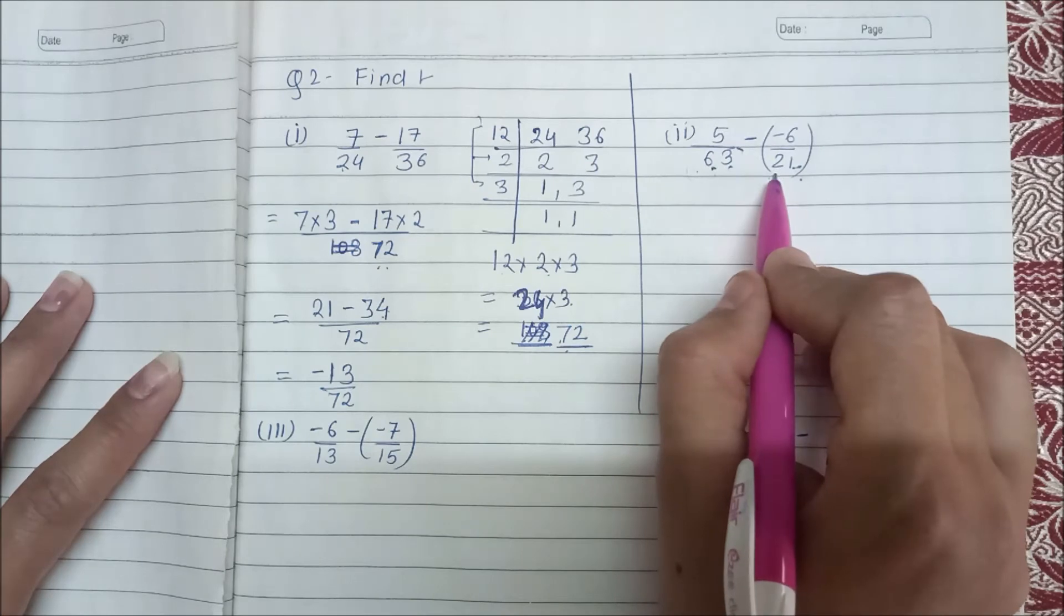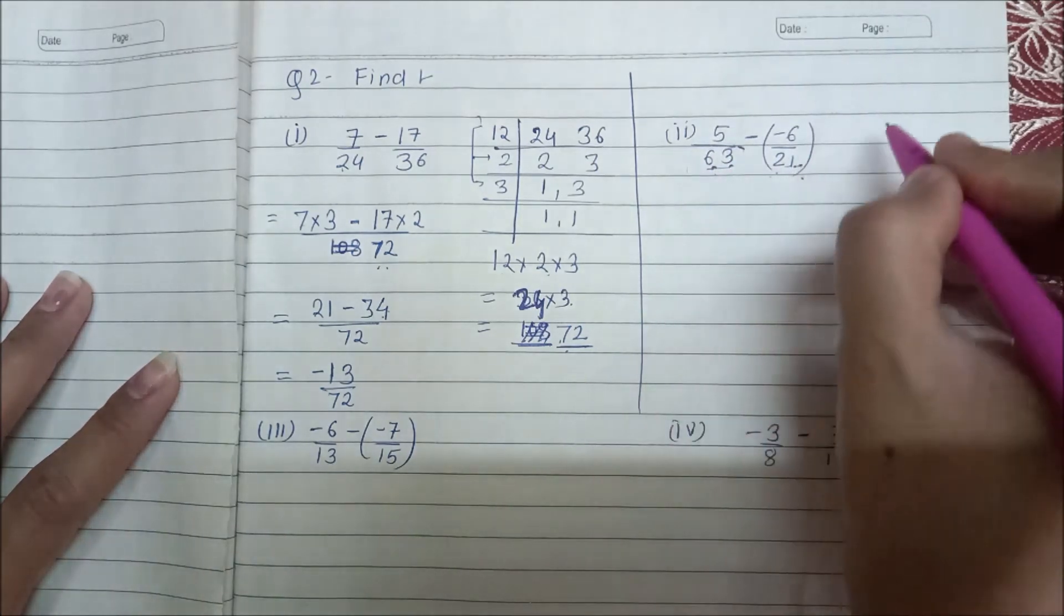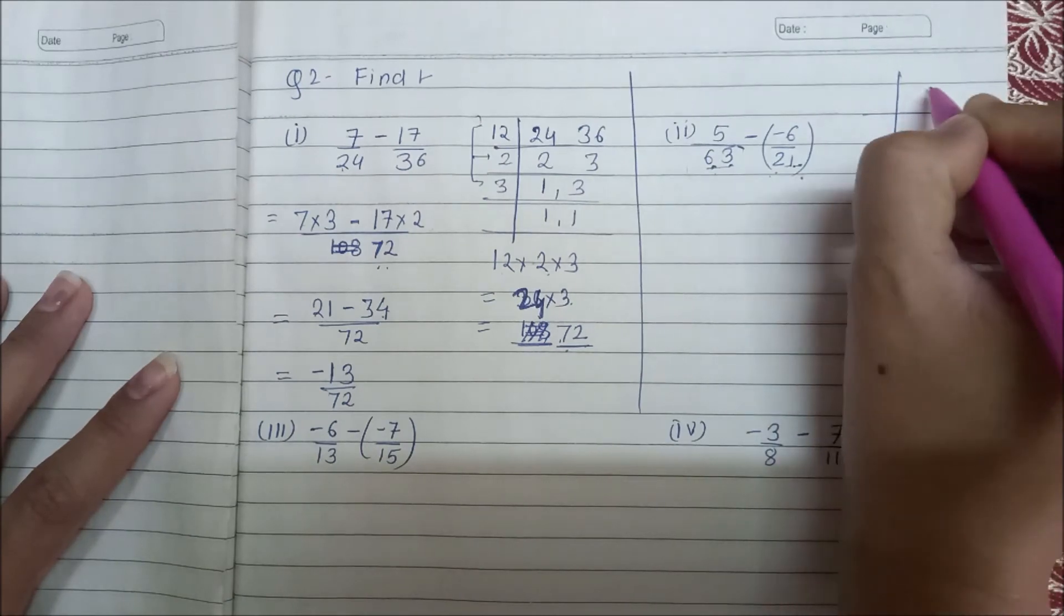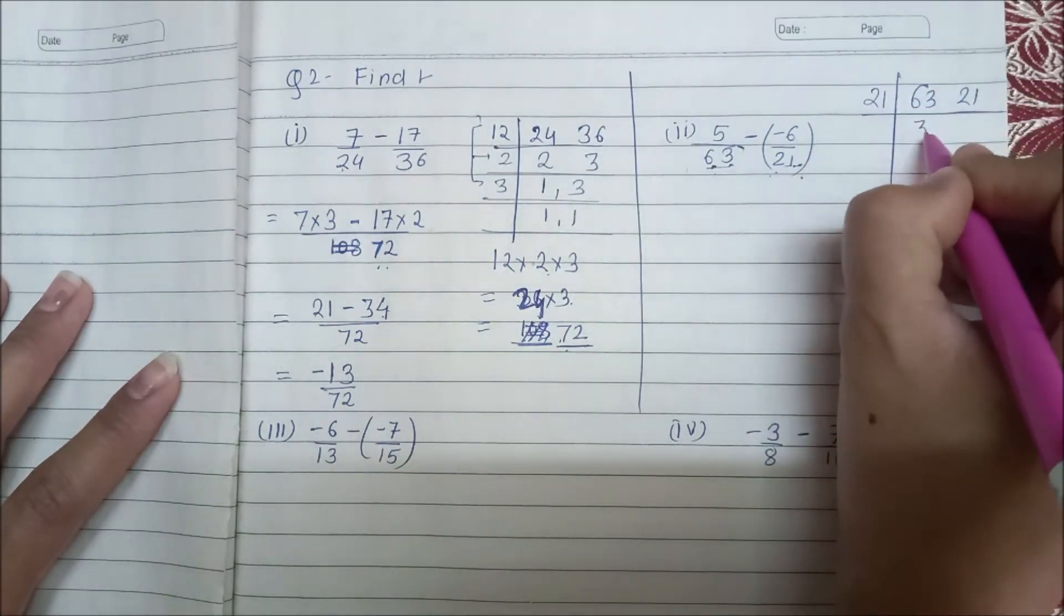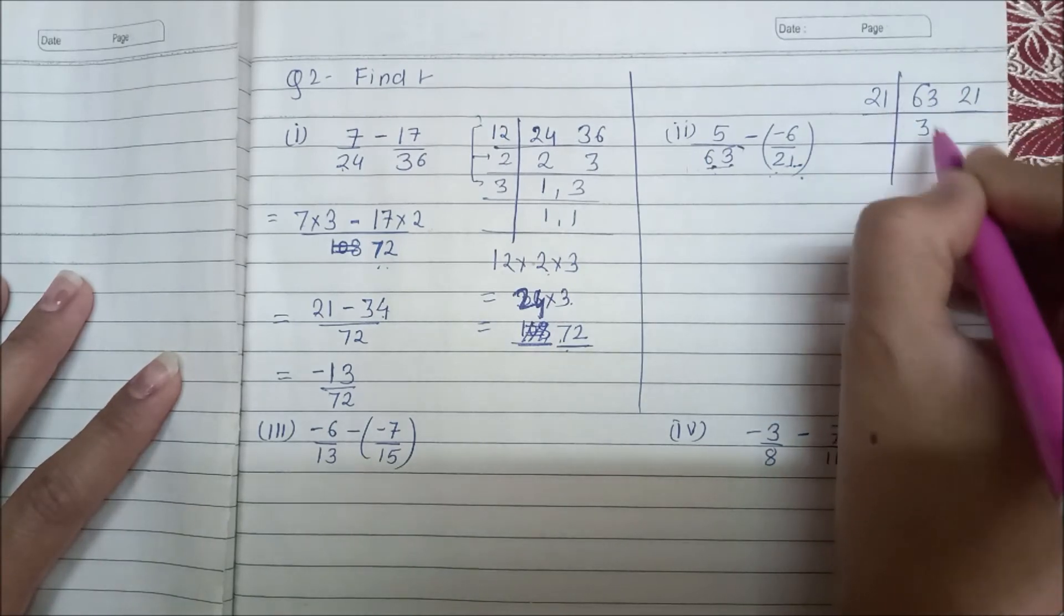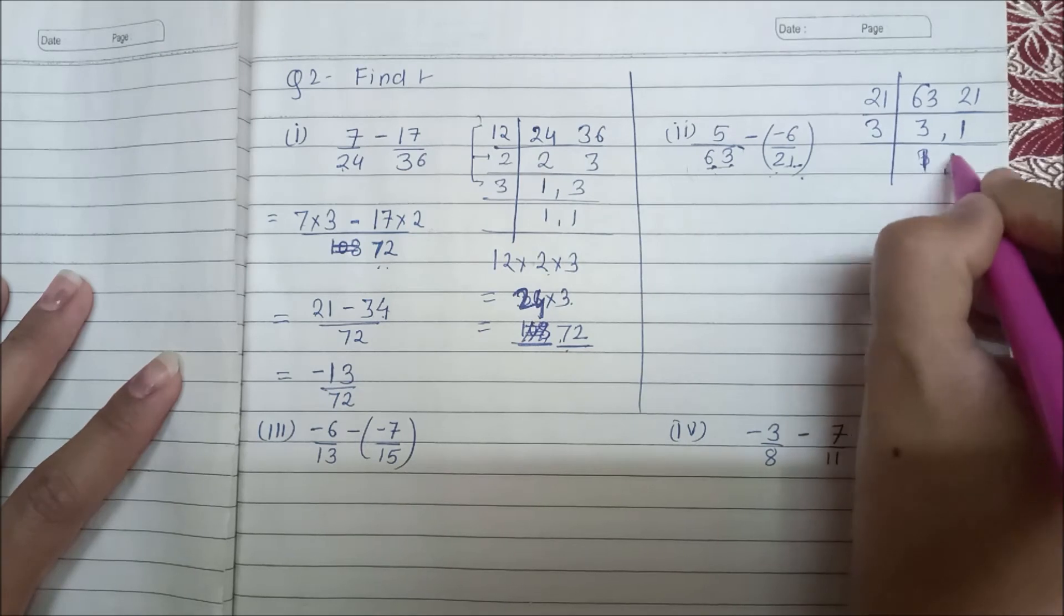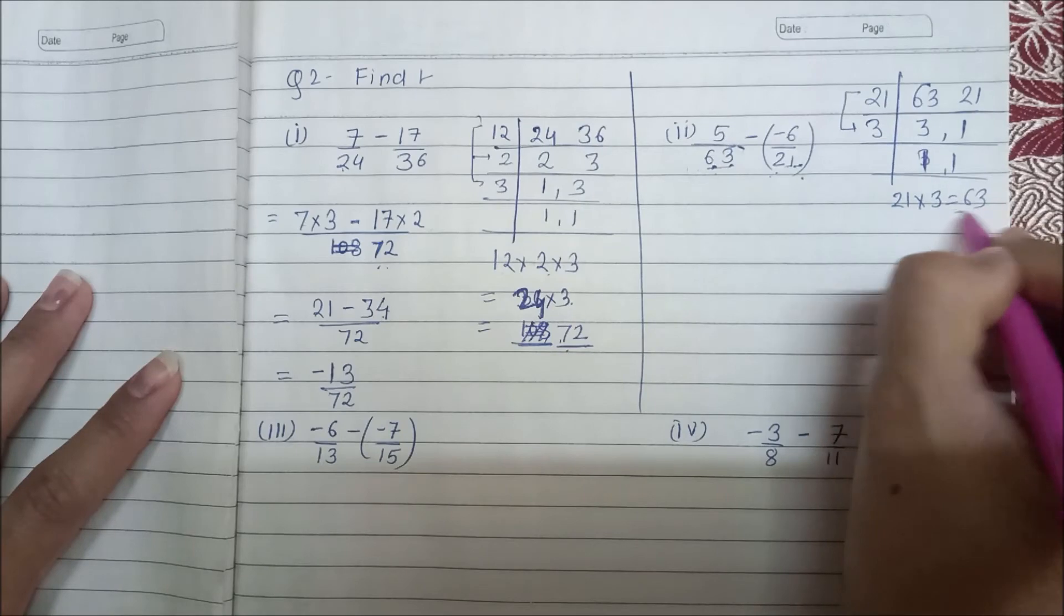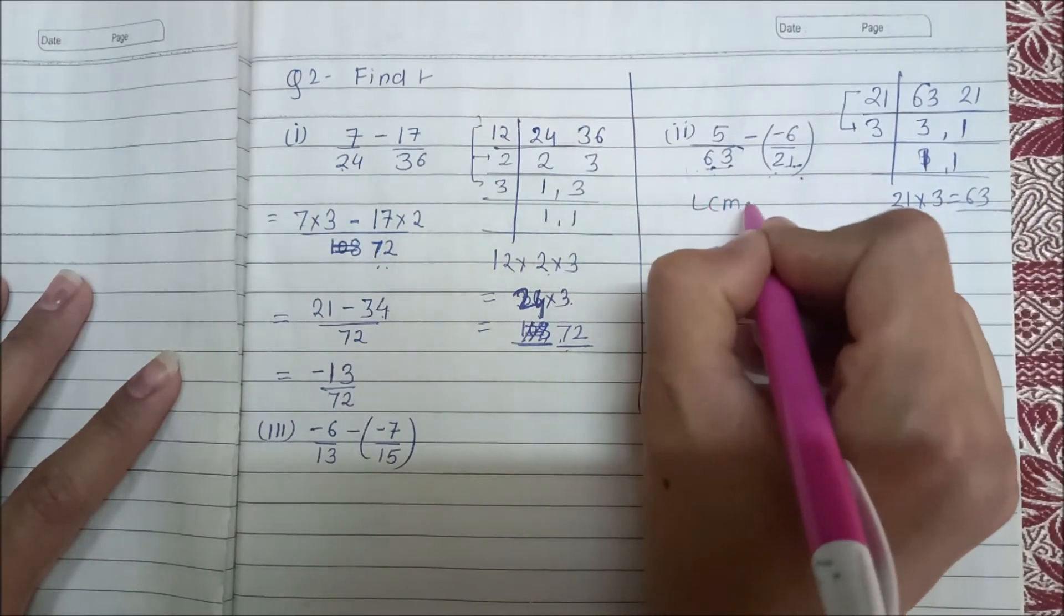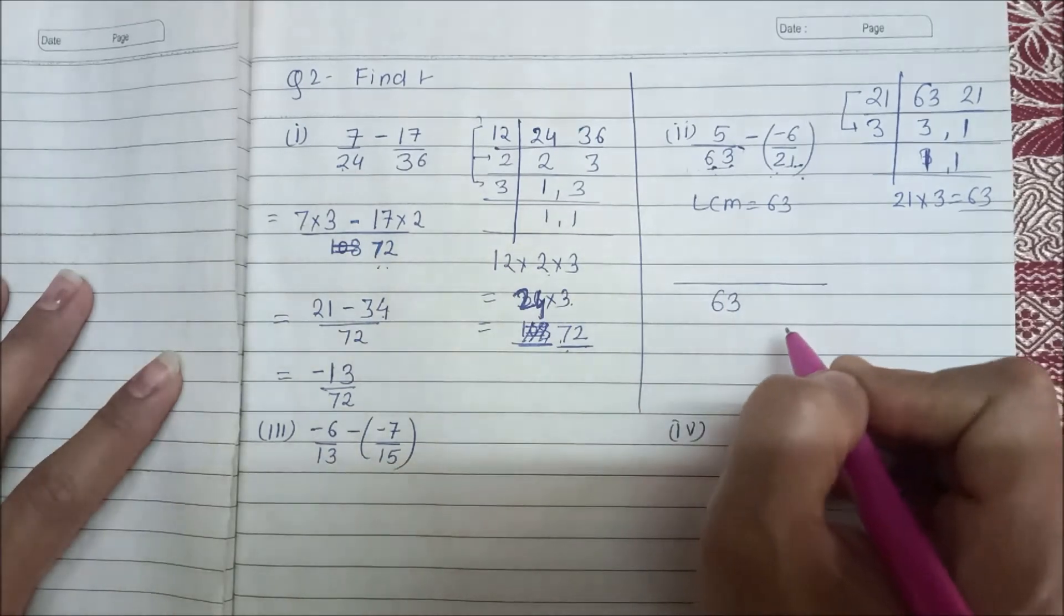It will come 3 times. What is 63? We have to check. Then we will see 63 and 21. If I do directly, 21 times 3 is 63. This is our LCM.